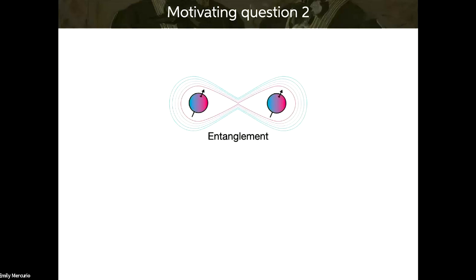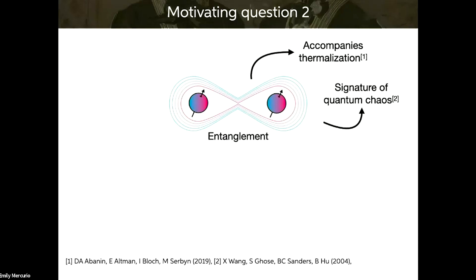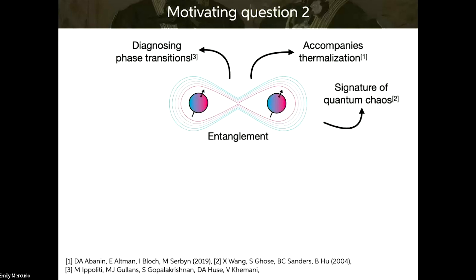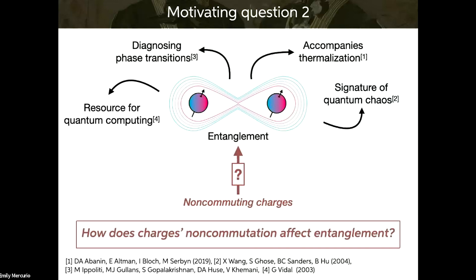The second motivating question comes from knowing a lot about entanglement. We know that entanglement accompanies thermalization, it's a signature of quantum chaos, it's used for diagnosing phase transitions, and it's a resource for quantum computing insofar as a polynomial amount of entanglement with the system size is necessary for an exponential speedup. We don't know as much yet about non-commuting charges, so if we can understand the effect of non-commuting charges on entanglement, we'll know something about the relationship between non-commuting charges and all these other interesting effects.